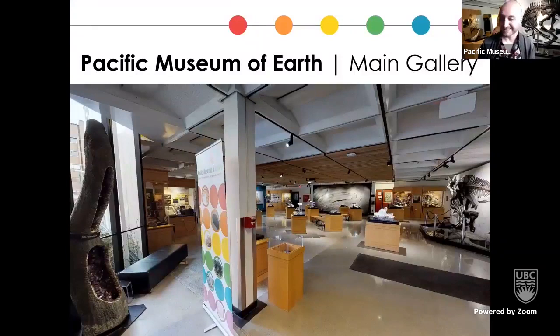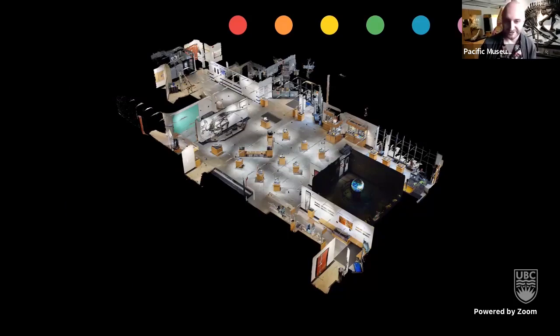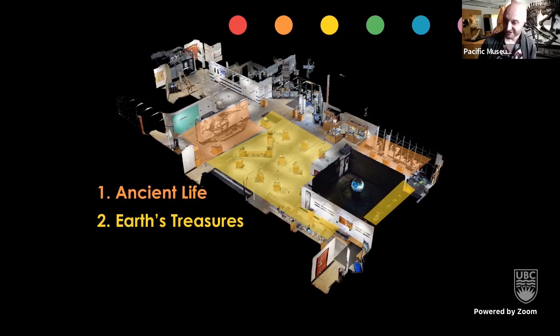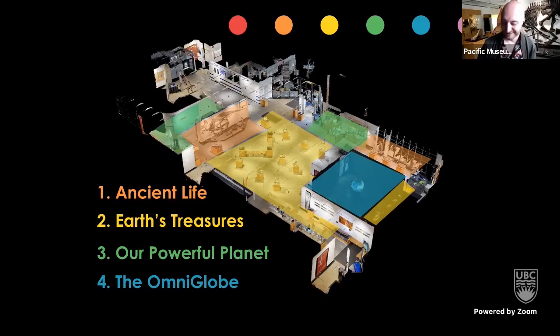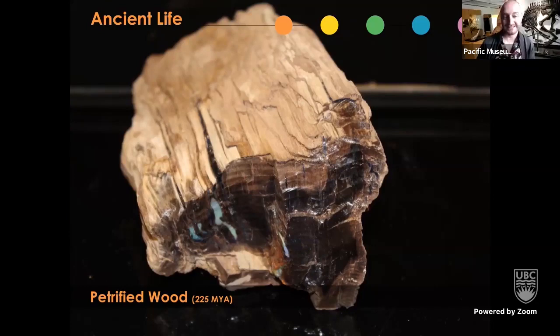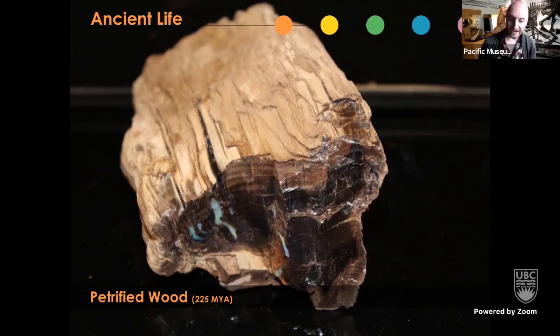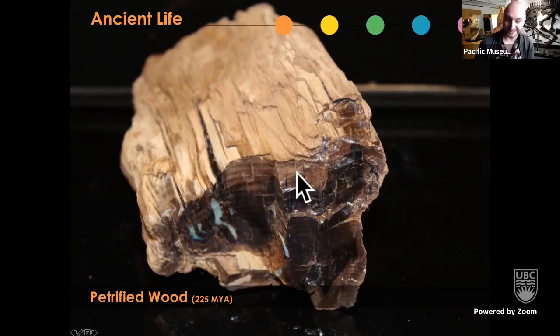The museum is divided into four main categories: Ancient Life or fossils, Earth's Treasures or minerals and gems, Our Powerful Planet or natural disasters, and the OmniGlobe. Let's start with our first section. This piece of semi-petrified wood from Nevada is about 225 million years old. It's semi-opalized — opal has penetrated into the core — but fascinatingly, the outside still hasn't fossilized; it's still cellulose, or wood.